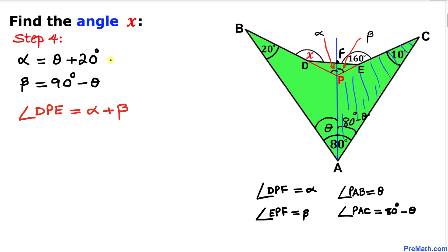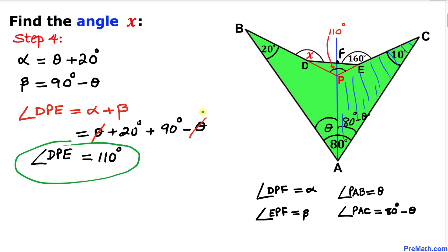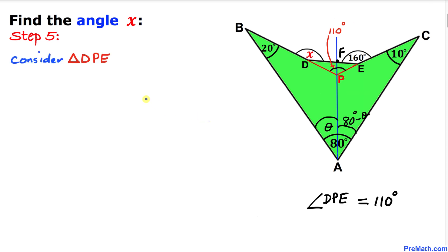Let's recall we already figured out alpha and beta. Now let's focus on angle DPE. Angle DPE equals the sum of alpha and beta. Plugging in: alpha is theta plus 20 degrees, and beta is 90 degrees minus theta. The positive theta and negative theta cancel, so we end up with angle DPE equal to 110 degrees.